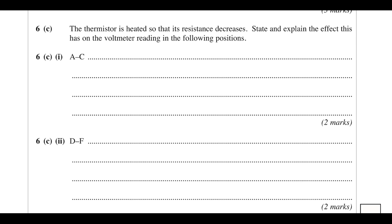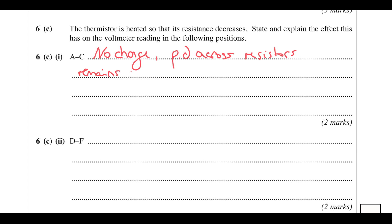The thermistor is heated so its resistance decreases. What effect does this have on the voltmeter reading between A and C? The effect is nothing — no change. The potential difference across the resistors in the other parallel loop stays the same, because adding or changing components in a parallel section has no effect on the other parallel sections.